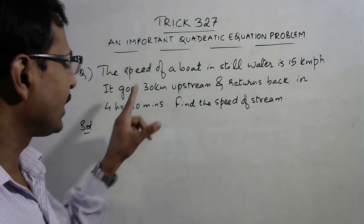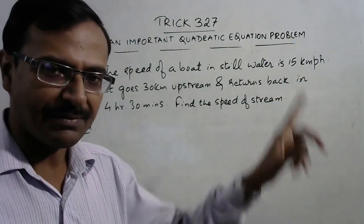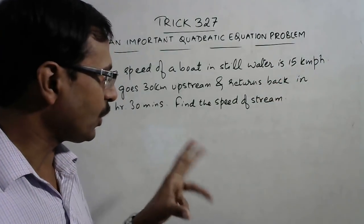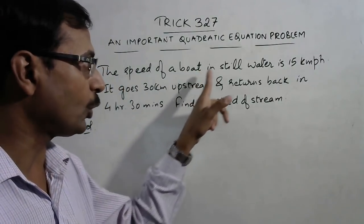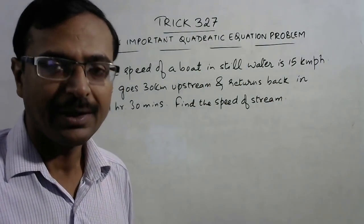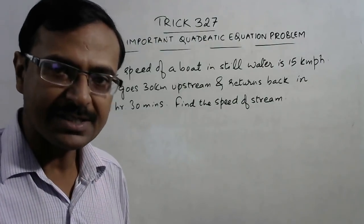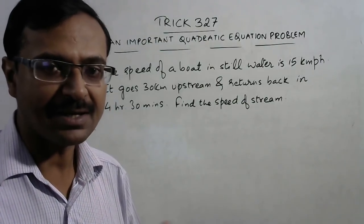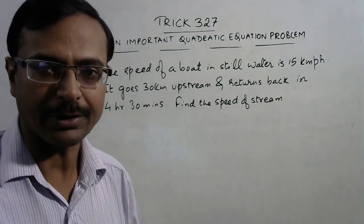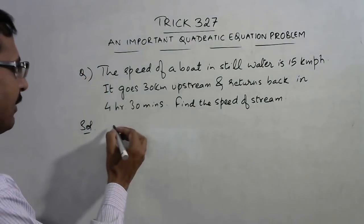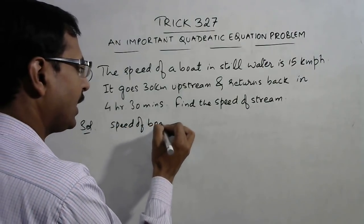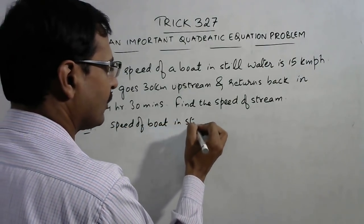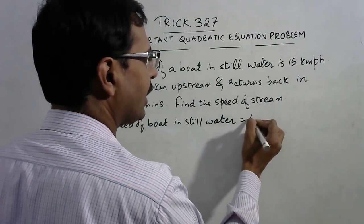In this question the speed of boat in still water is given. In upstream and downstream questions we have two speeds: one is the speed of boat in still water, when water is not moving, and the other is the speed of the stream, the rate of flow of the water. So we are given that speed of boat in still water is 15 km per hour.